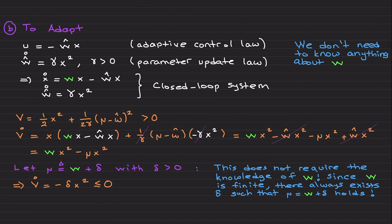Now let's use adaptive control and visit the 'to adapt' principle. You're going to see the simplest adaptive control architecture for the first time. Instead of a fixed gain control law I'll use u = -ŵx, where ŵ is updated according to a parameter update law. The structure of that update law comes from the Lyapunov analysis — you'll learn how to derive it in more detail in this series. I don't want to go into too many details to avoid exhausting you at the very beginning.